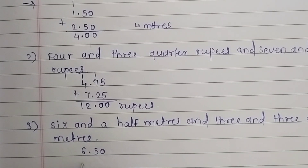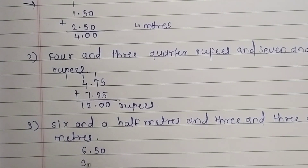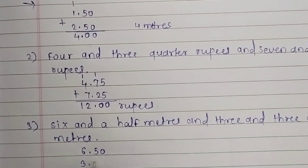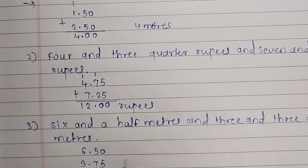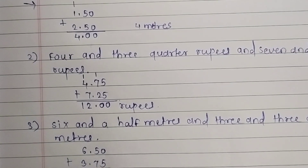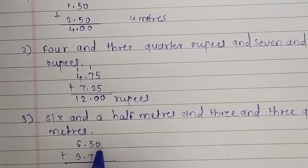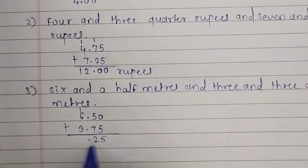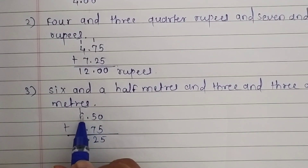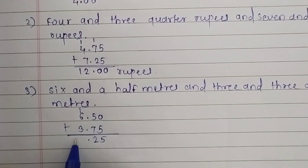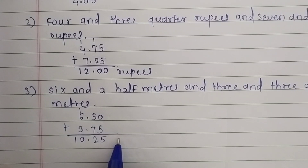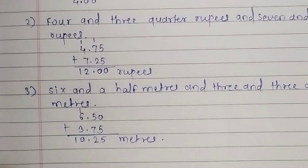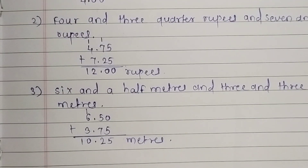Three and three quarters is written as 3.75, since three quarters means 0.75. Let's add them: 5 plus 5 is 10, 1 is carry, place the decimal point. 6 plus 1 is 7, plus 3 is 10. The answer is 10.25 meters.